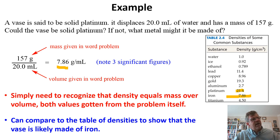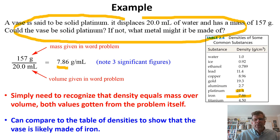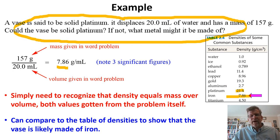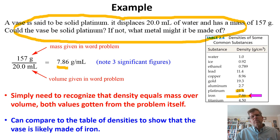Platinum is 21.4 grams per milliliter — we didn't get that. We got 7.86 grams per milliliter. Looking at the table, 7.86 grams per cubic centimeter corresponds to iron. So the vase is very likely made of iron, not platinum. This is a deceptive problem — it looks complex at first, but we just divided the given mass by the given volume and compared that density to a table to identify the metal.